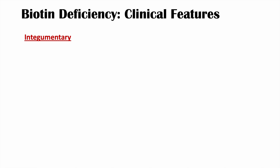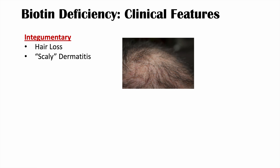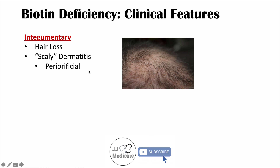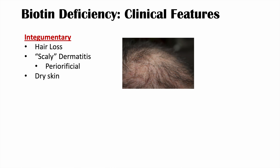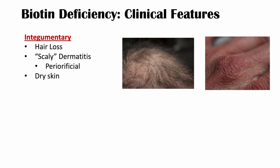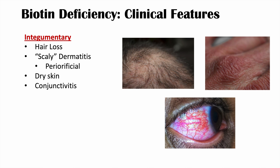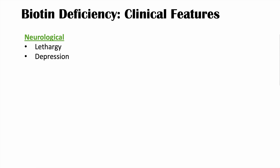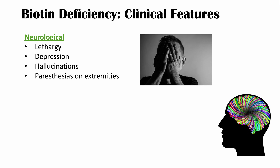What are the clinical features of a biotin deficiency? Starting with the integumentary system: we can see hair loss, scaly dermatitis — inflammation of the skin with a scaly appearance that is periorificial, found around the orifices, particularly on the face, sometimes called a biotin-deficient face — dry skin, and conjunctivitis. The neurological system is also affected: lethargy, depression, even hallucinations in some cases, paresthesias on extremities such as numbness and tingling, hypotonia, ataxia, and even seizures in some cases.